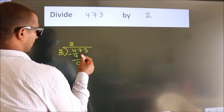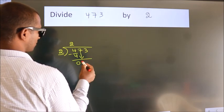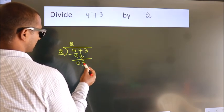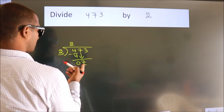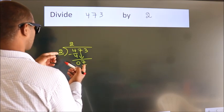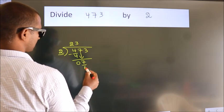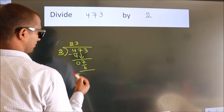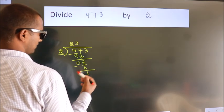After this, bring down the next number. So 7 down. A number close to 7 in the 2 table is 2 times 3, which is 6. Now we subtract. We get 1.